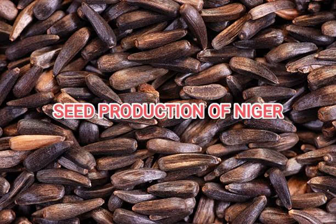Isolation distance: Niger is a completely cross-fertilized crop. A minimum isolation distance of 400 meters for foundation seed fields and 200 meters for certified seed fields all around the seed fields is necessary to separate it from fields of other varieties of niger, or fields of the same variety of niger not conforming to varietal purity requirements for certification.